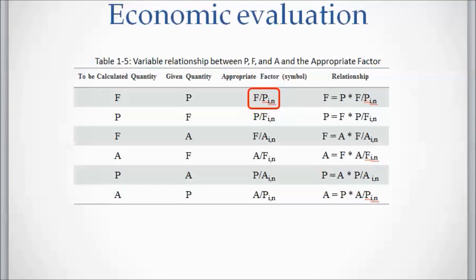The first letter on the left hand side of the slash sign shows the variable that needs to be calculated, and the second letter on the right hand side of the slash sign shows the given variable. The two subscripts on each factor are interest rate i, followed by the number of interest compounding periods n.